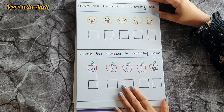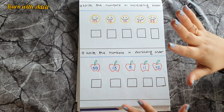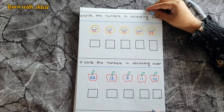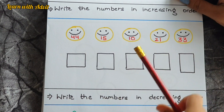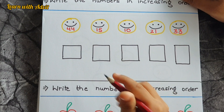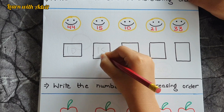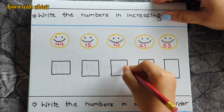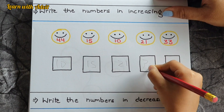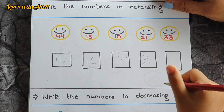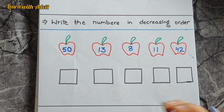This sheet is about numbers in increasing order and numbers in decreasing order. Increasing order means small to big, and decreasing means big to small. Come on, write it down fast. First 10, then 15, then 21, then 33, and 44. Very good. And now you do the decreasing order.